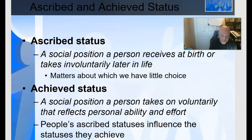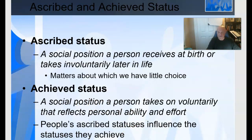Achieved status is a social position a person takes on through personal ability and effort. The two tend to relate to each other — if you were born into a comparatively disadvantaged social position in terms of your ascribed status, achieving may be more challenging.